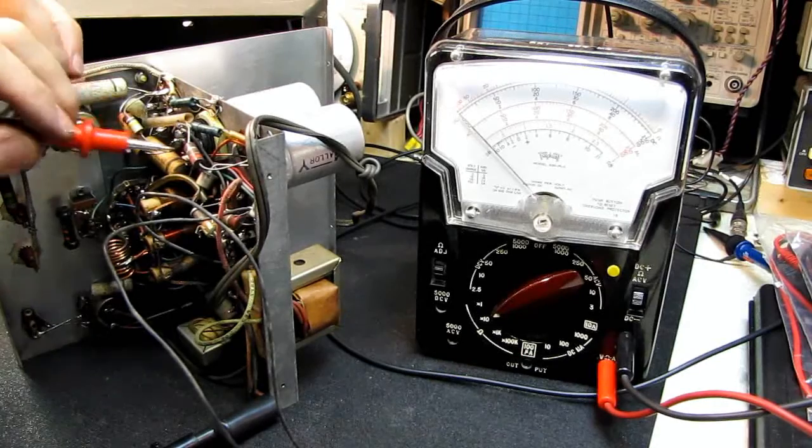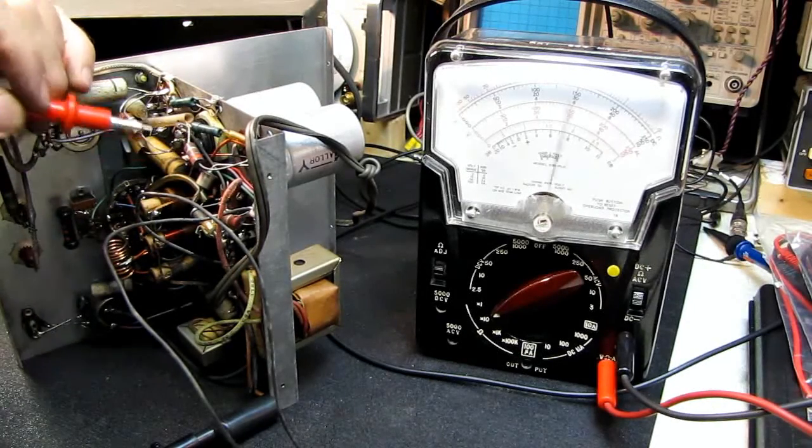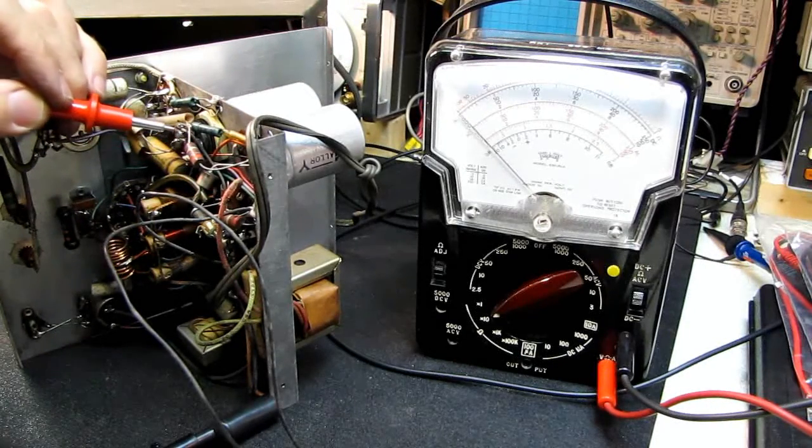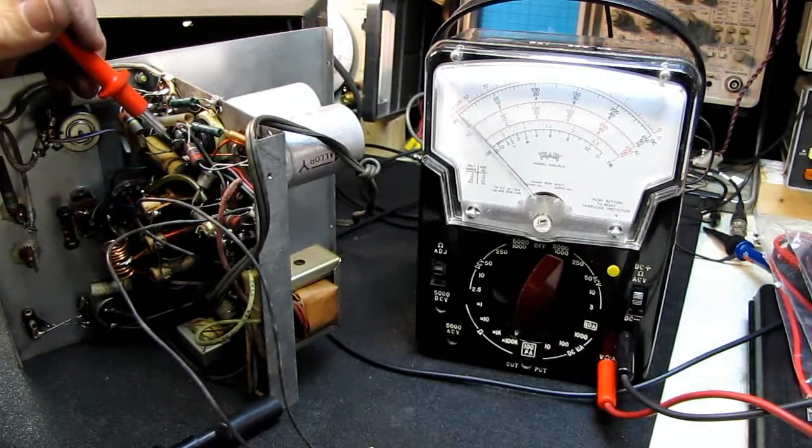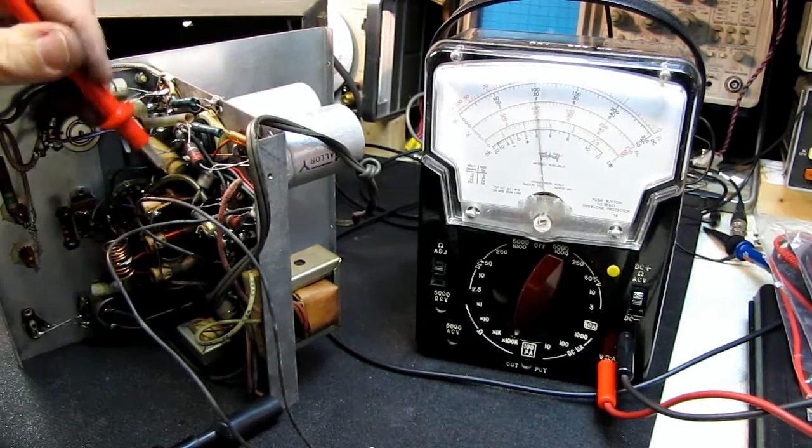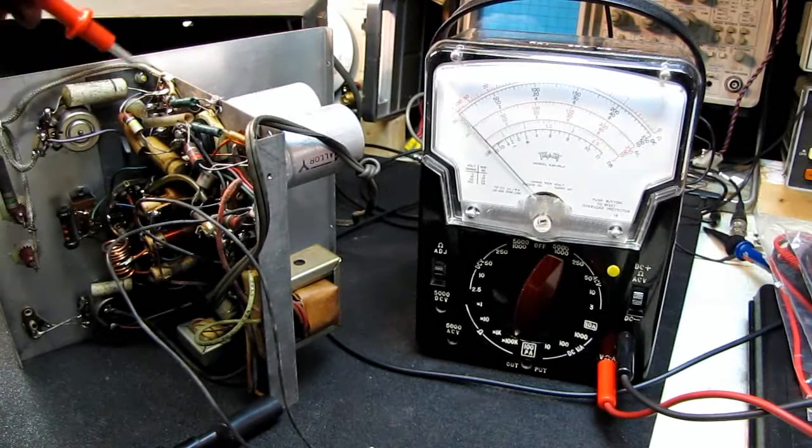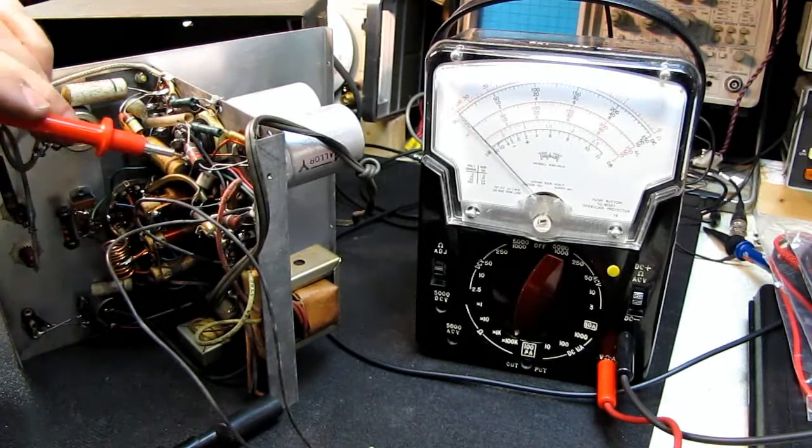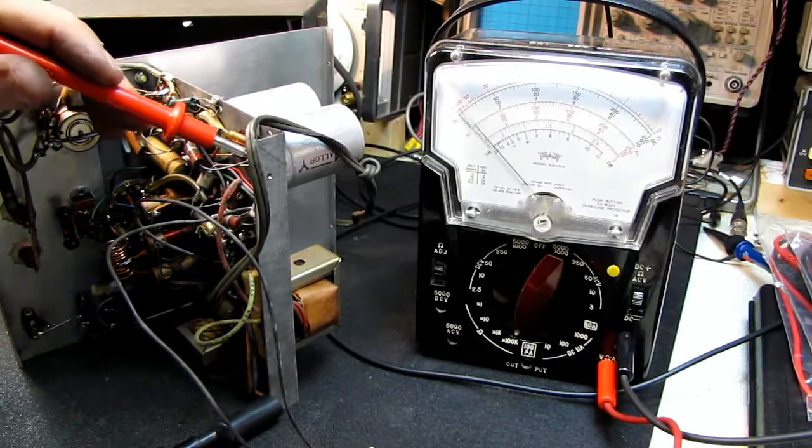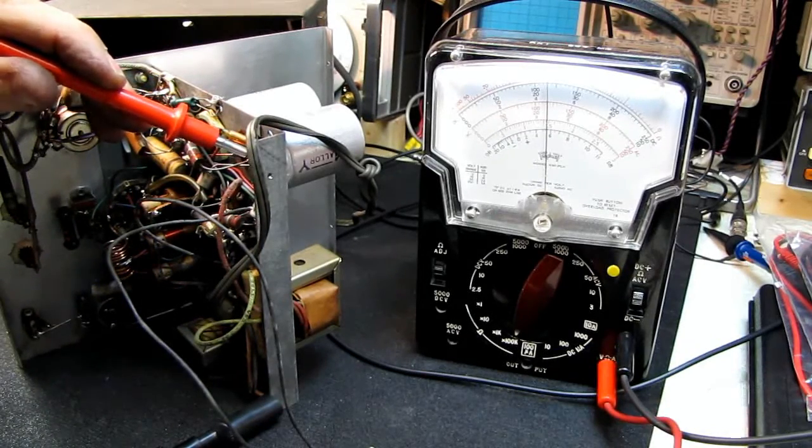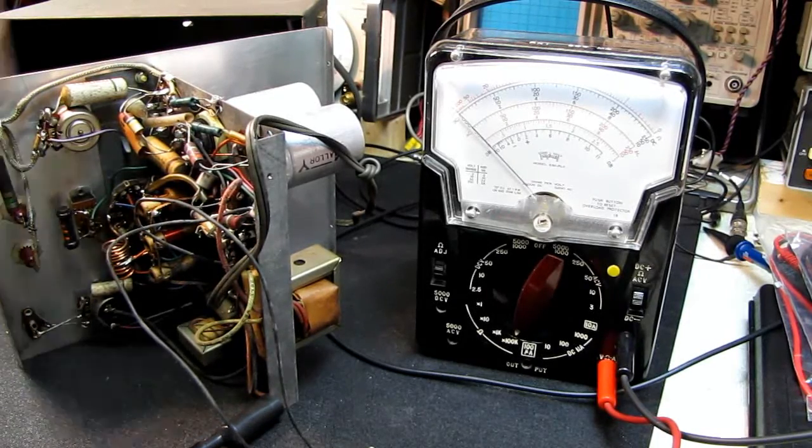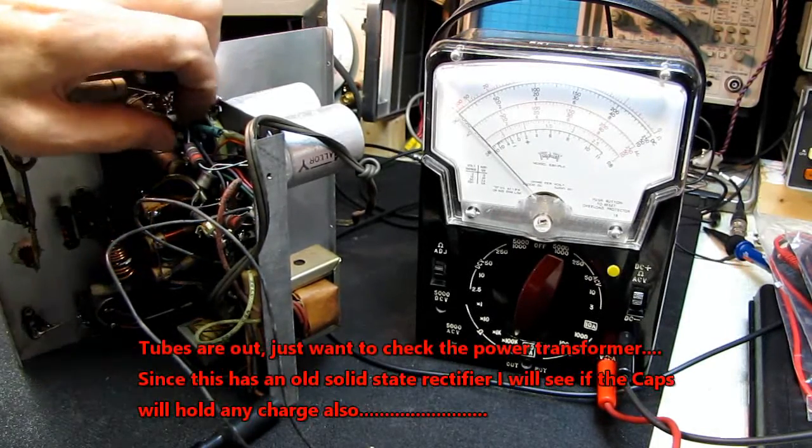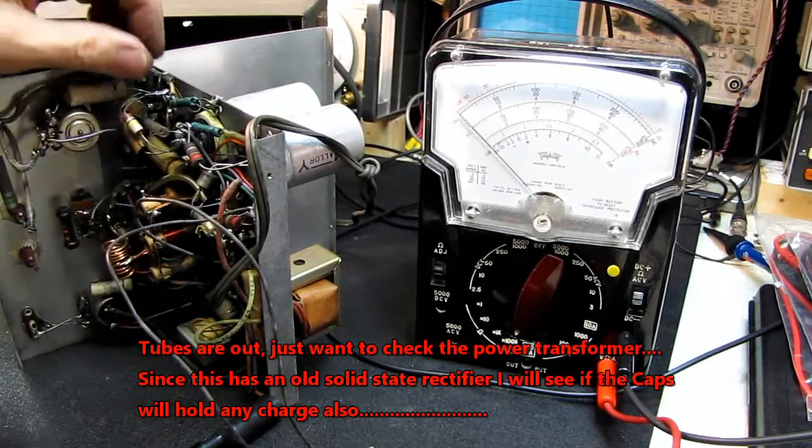I'm not seeing a direct short there. And again, that's ground—no direct shorts there. Let's go up to a higher range and follow some resistors. Yep, that goes to ground again, and it goes to ground. So we should be kind of okay for a short period of time here and power this on.